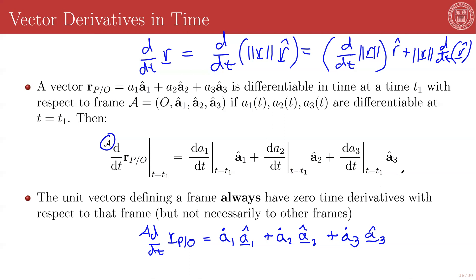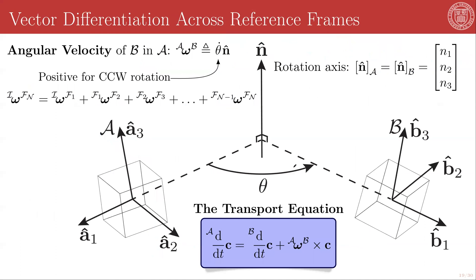And we do, we do have a method for doing this, but it requires for us to define a new thing. And that thing is the angular velocity. The angular velocity of a frame B in frame A, which we will call A omega B, is going to be defined as the angular rate of change of those two frames in the direction of the axis of rotation.